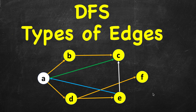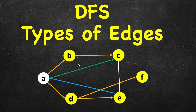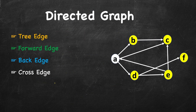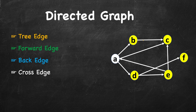In this video we will study different types of edges, or edge classification, when we do a depth first search of a graph. We will see this for both directed and undirected graphs. These edges are shown in different colors and have different names — that's why they are drawn in different colors. First we will take the more complex case, the directed graph, where we have a notion of direction.